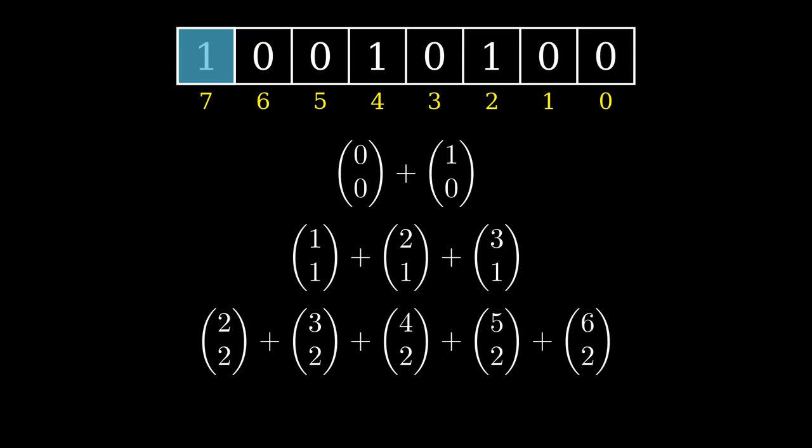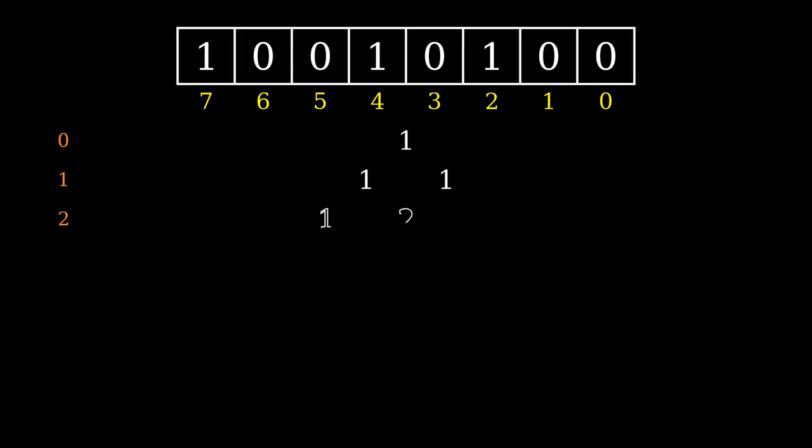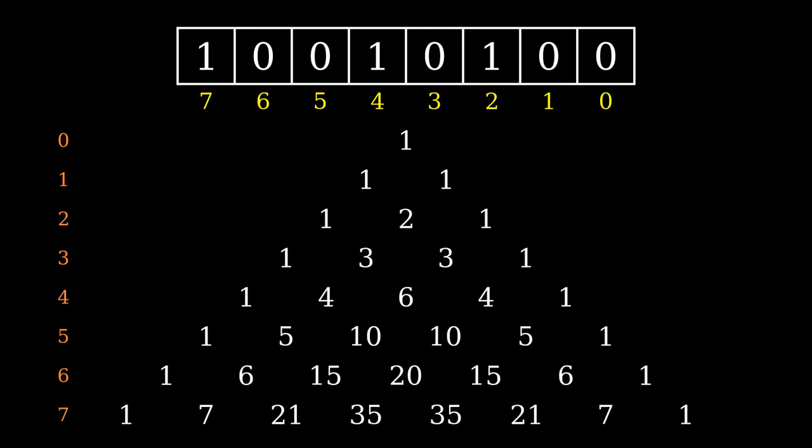Admittedly, this is still a bit confusing. The pattern becomes clearer when you look where these combination sums appear on Pascal's triangle. For the first 1 bit, add up the first diagonal column, stopping just short of the second row. For the second 1 bit, add up the second diagonal column, stopping just short of the fourth row.